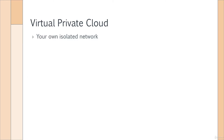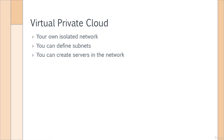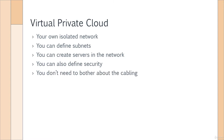So in AWS, you have the virtual private cloud — your own isolated network on Amazon Web Services on the internet. Here, you don't need to worry about the networking, the cables, nothing. Everything is done for you by AWS. You can create the network, you can define something known as subnets, you can create your servers in this network. You can also define security — if you want to decide what traffic is allowed to enter your network, you can do this via the security measures available for the virtual private cloud. You don't need to buy cables, maintain the network, maintain the racks — all done by Amazon Web Services.